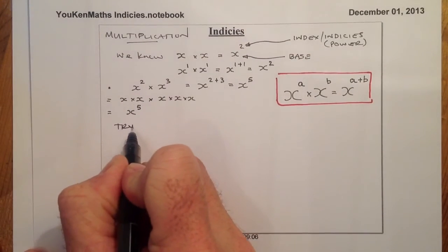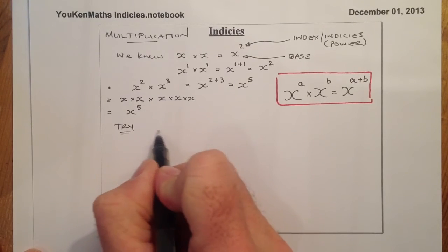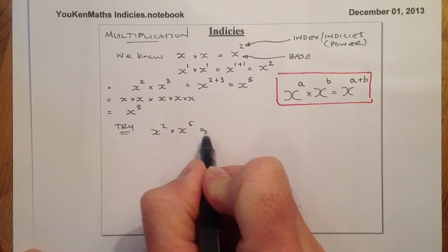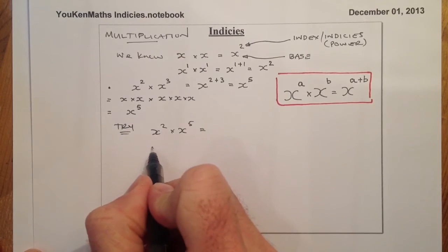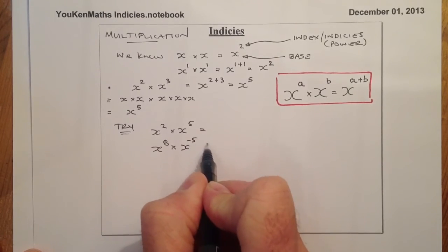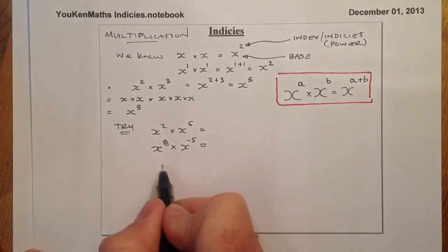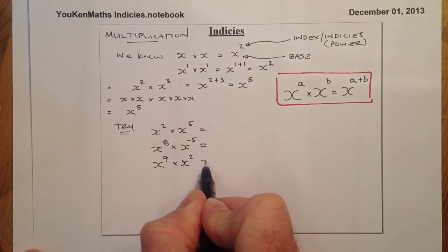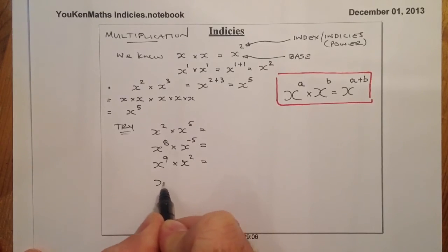So here's a couple of them for you to try. Let's go for x squared times x to the power of 5. What I'd like you to do is once I write them down, you can freeze the video. I'm going to put a minus 5 in there and see if you can cope with that one. I'll go for x to the power of 9 times x to the power of 2. And I'll just put in another negative index here. Freeze the video and try these questions.